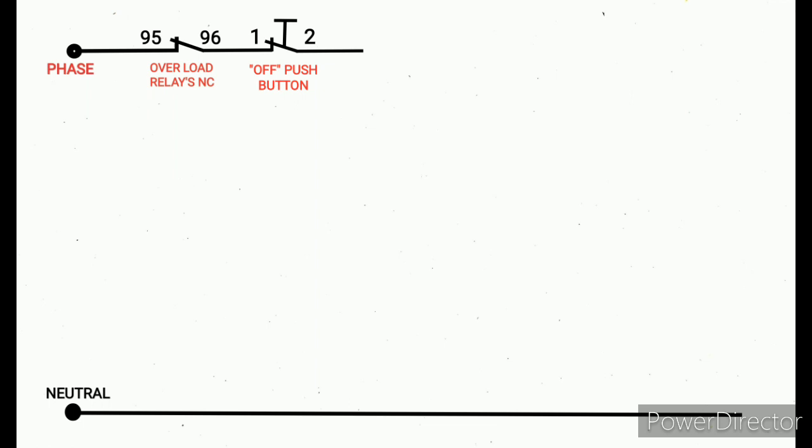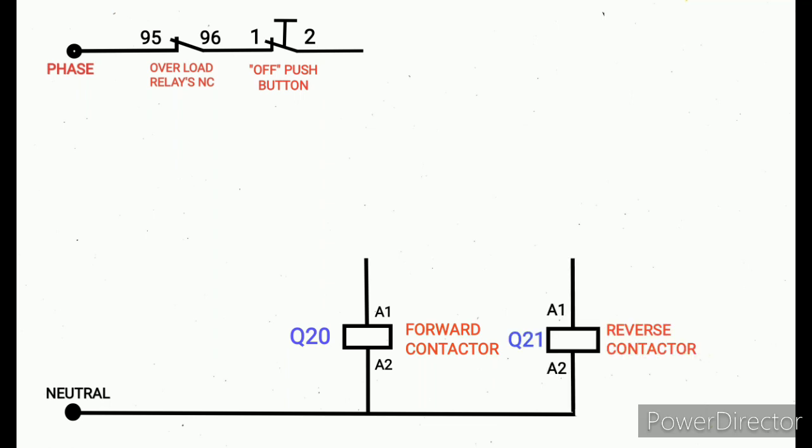Next we are going to draw both conductors, forward and reverse, with interlock. First we're going to draw forward contactor. I named here Q20. A2 is connected to neutral, the A1 will be connected later. Next we're going to draw reverse contactor, I named here Q21. This is similar to Q20, A2 is connected to neutral. Next we have started to draw interlock. This is the interlock logic.